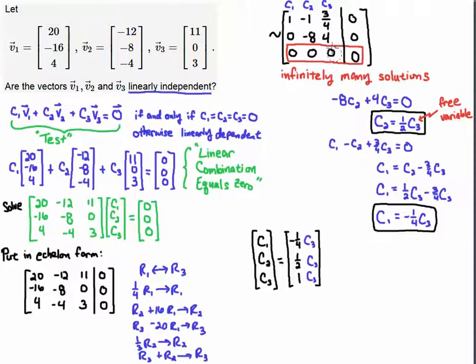So I'm going to use back substitution to determine what c1, c2, and c3 are. If I look at this second row, I have minus 8c2 plus 4c3 equals zero. So I solve for c2 and I get one-half c3. I'm going to define c3 to be my free variable in this case.